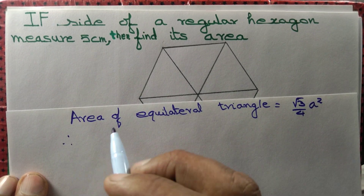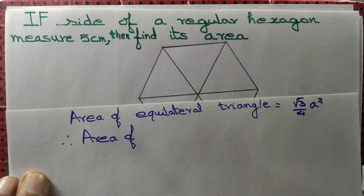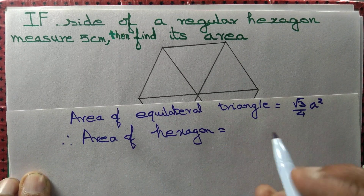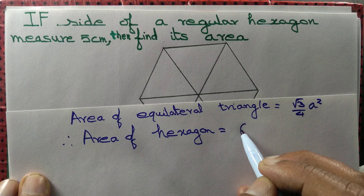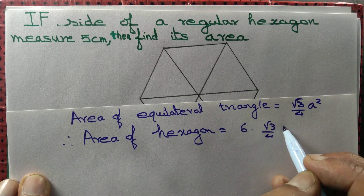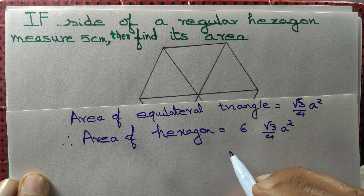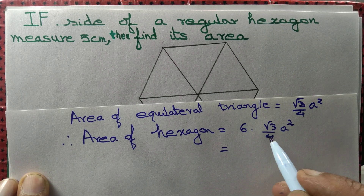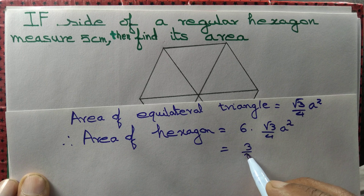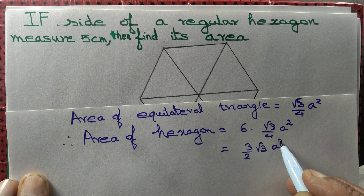Therefore, the area of the hexagon equals 6 equilateral triangles, so 6 × √3/4 · a². We can cancel 2 out, giving us 3/2 × √3 · a².